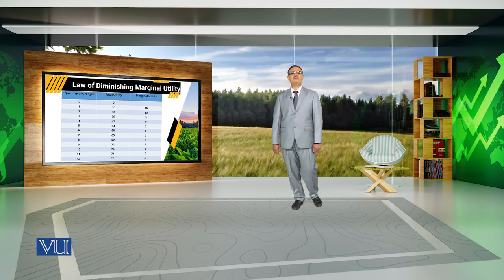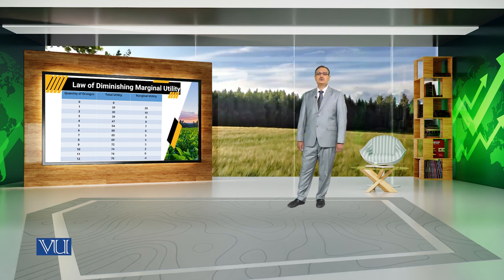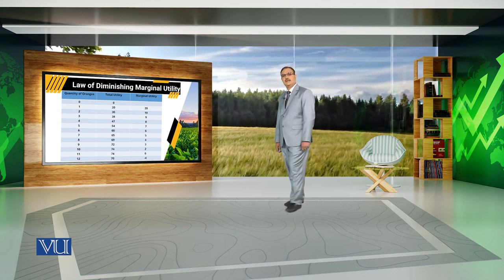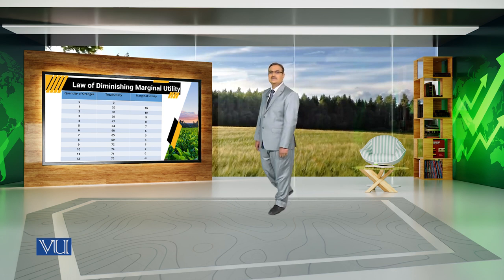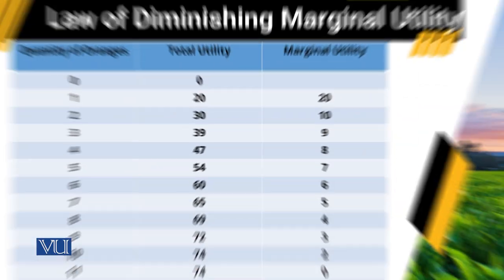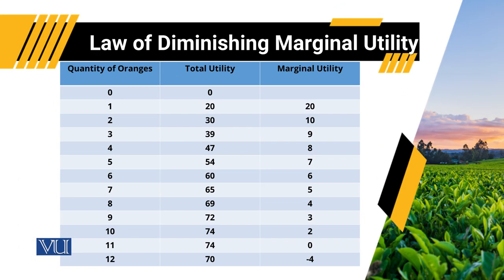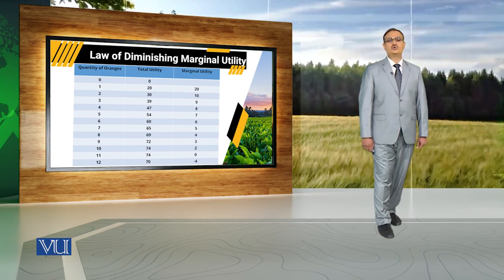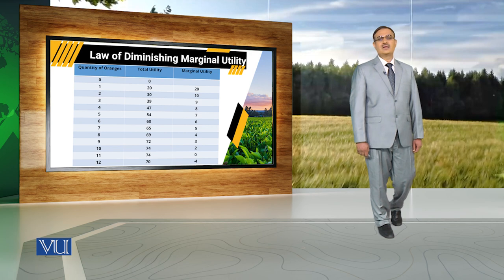For example, for the first unit of orange, marginal utility is equal to 20, while for the second unit of orange it becomes 10. This declining trend is continuous up to 11 units of orange. Even against the 11th unit of orange, marginal utility becomes 0, and after the 11th unit of orange, marginal utility becomes negative.